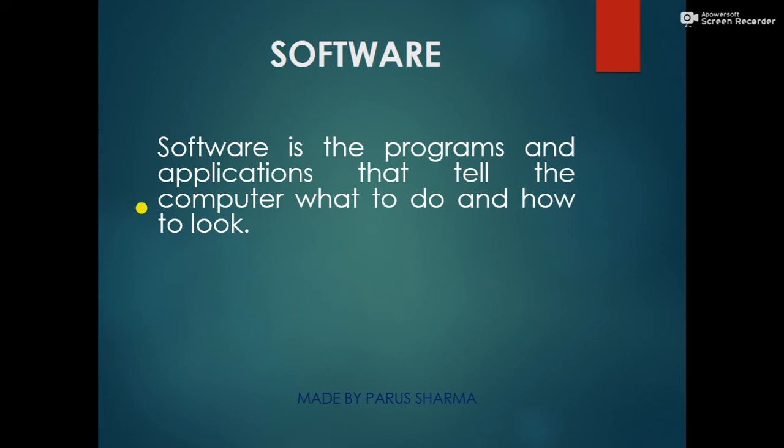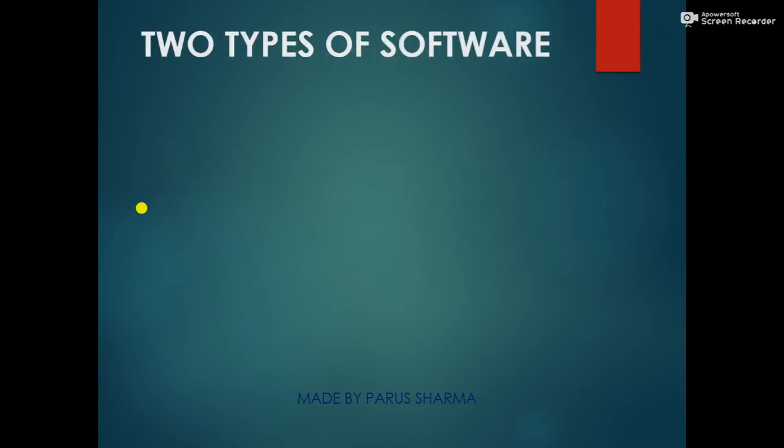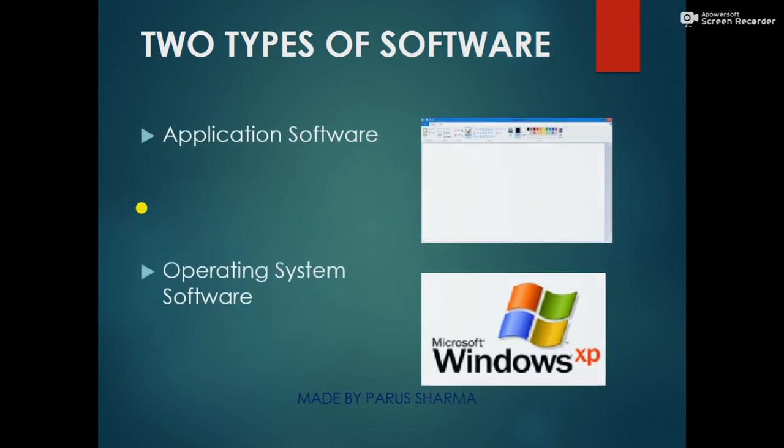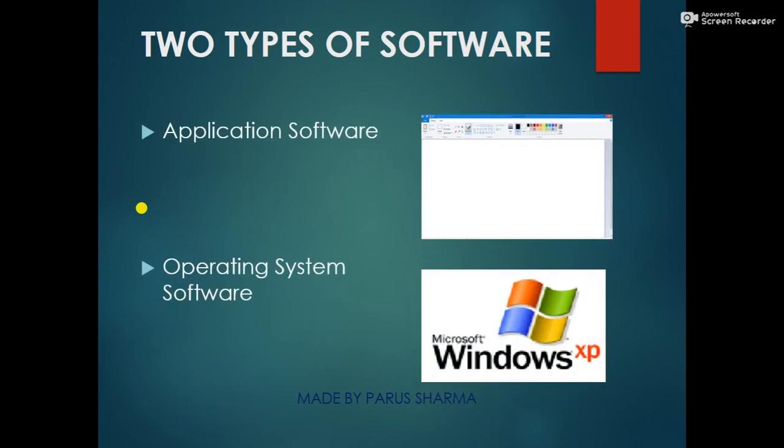to look. The two types of software are application software and operating system software. Application software includes things like MS Paint, games you can play on the computer, or MS Word. The operating system is Windows 7, XP, or Windows 10.